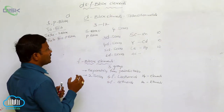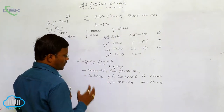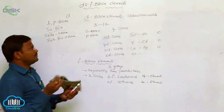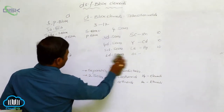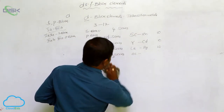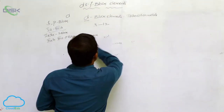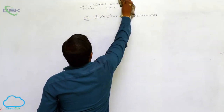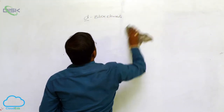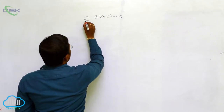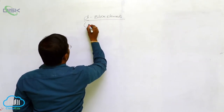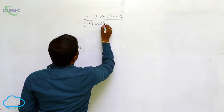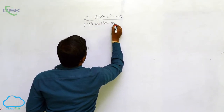This is the general identified characteristics of D and F block elements. Let us look at D block elements. The D block elements are also called as transition metals.